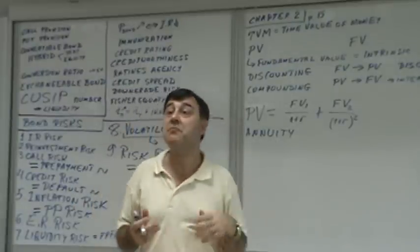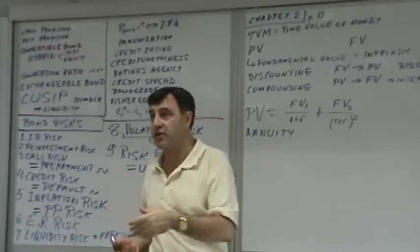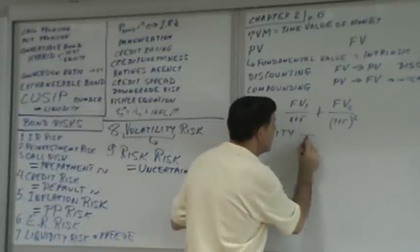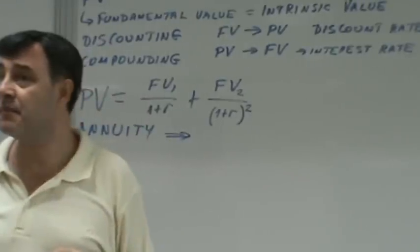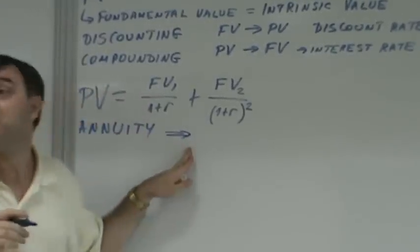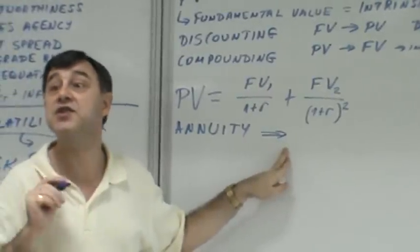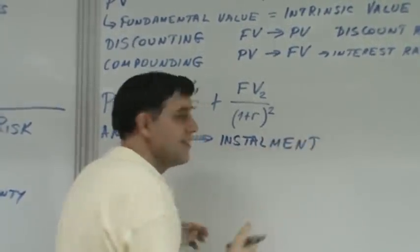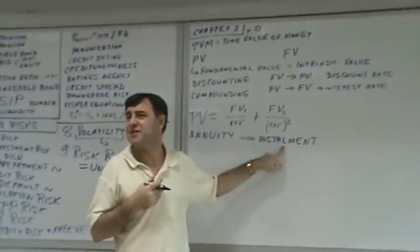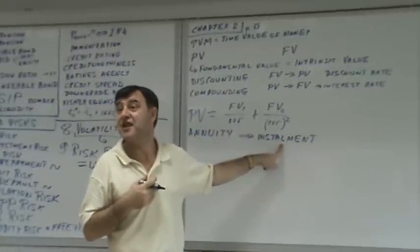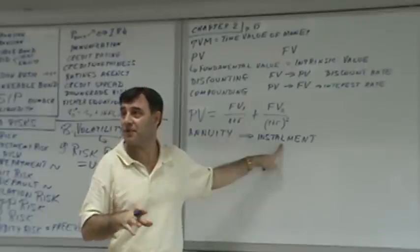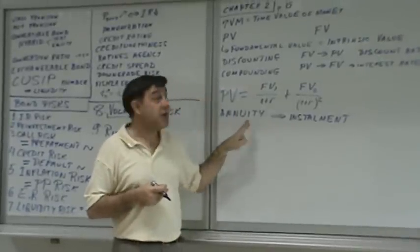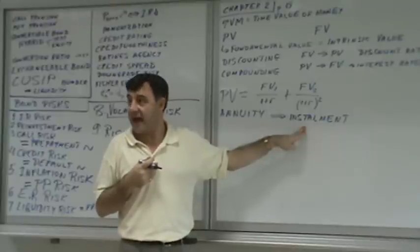Annuity can also apply to monthly payments, such as paying rent or a mortgage. Each single cash flow of an annuity is called an installment — sometimes spelled with one L, sometimes two L's depending on British or American English. In an annuity, all installments have the same value.